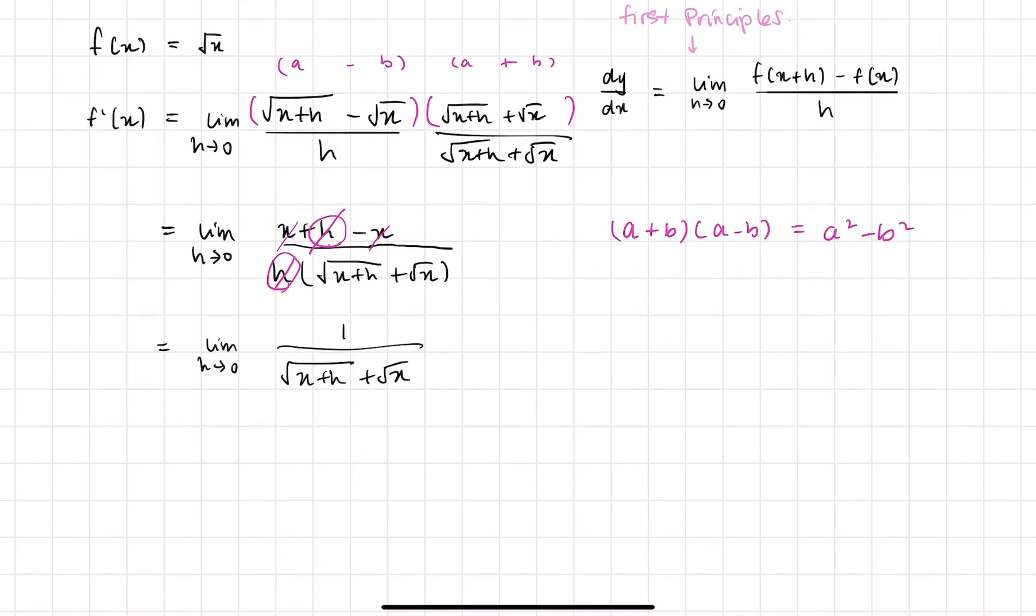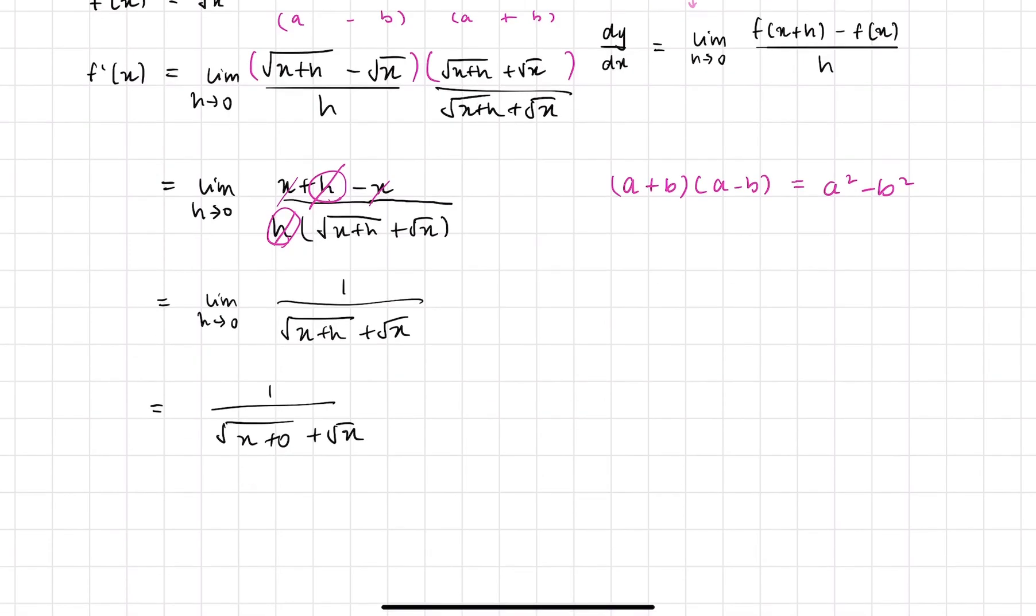So we have one over this. And now it looks like it's a solution that we can just sub our h right in. So we can say one over x plus zero plus root x. Okay, which means we have one over, so plus zero is nothing, right? So if I just rub that out, we have two square root x on the bottom.